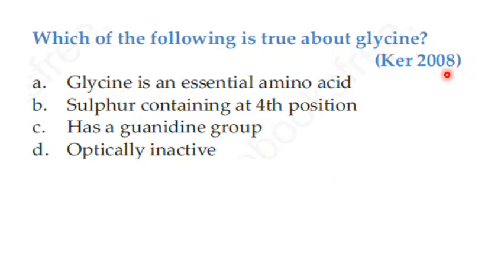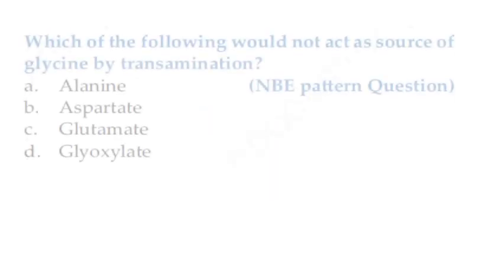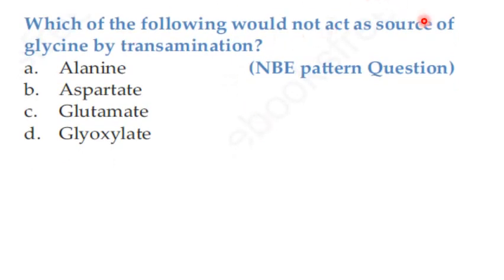MCQ 1 (Kerala 2008): Which of the following is true about glycine? Options: glycine is an essential amino acid; sulfur-containing; has a guanidine group; or optically inactive. Answer: glycine is optically inactive and is a non-essential amino acid. MCQ 2: Which would not act as a source of glycine by transamination? Options: alanine, aspartate, glutamate, glyoxylate. Glycine can be synthesized from serine via serine hydroxymethyl transferase, and from alanine, glutamate, and glyoxylate via glycine aminotransferase. Answer: aspartate.